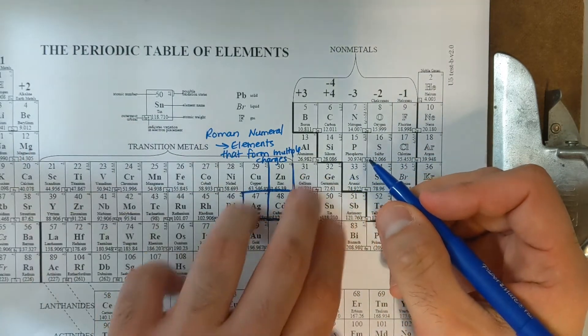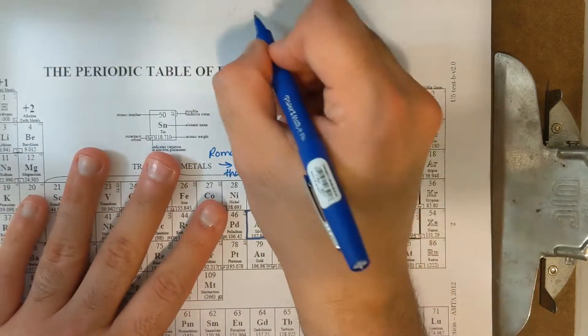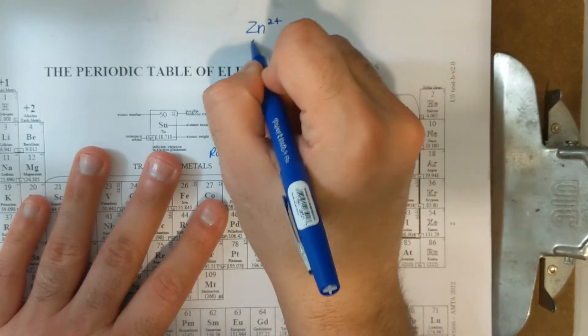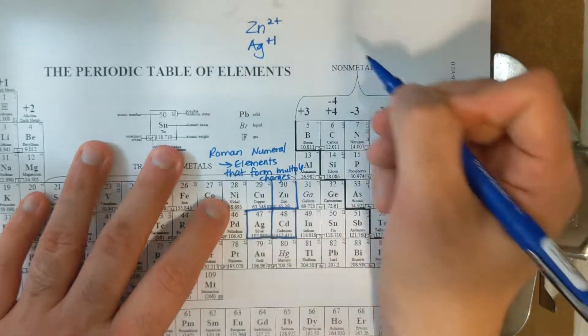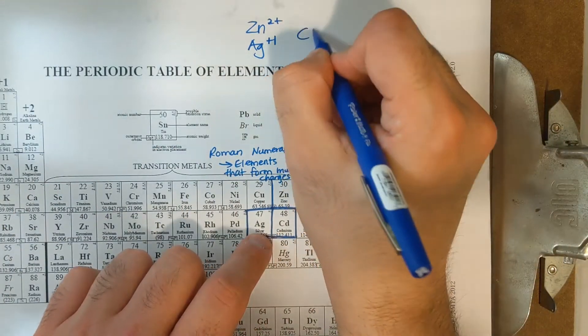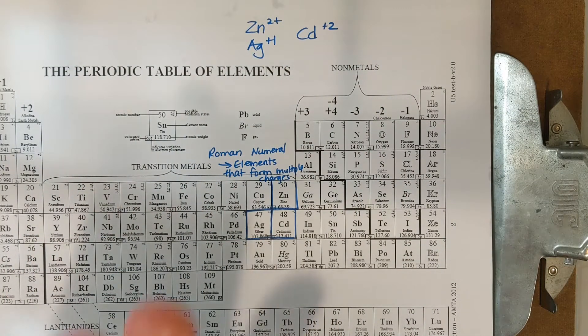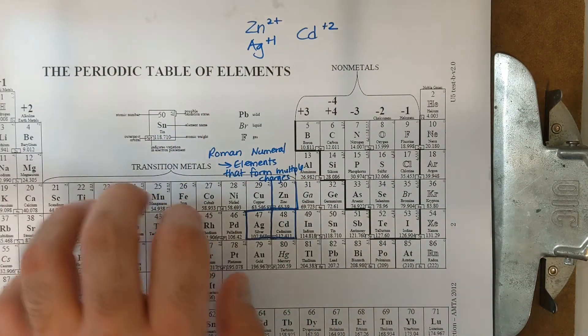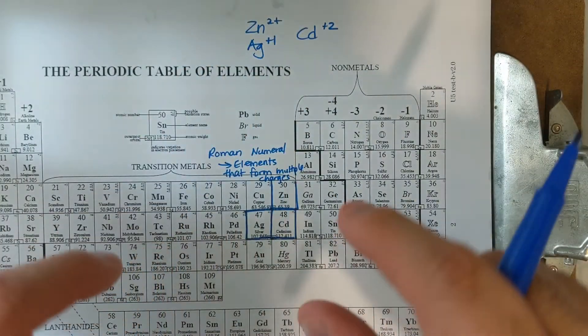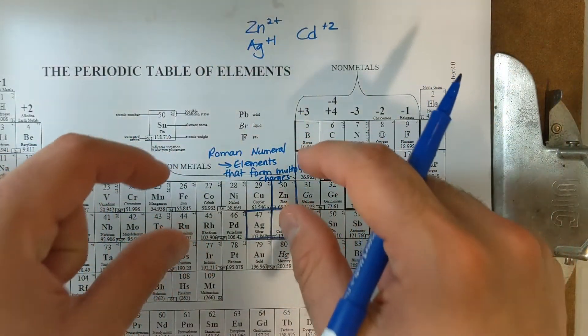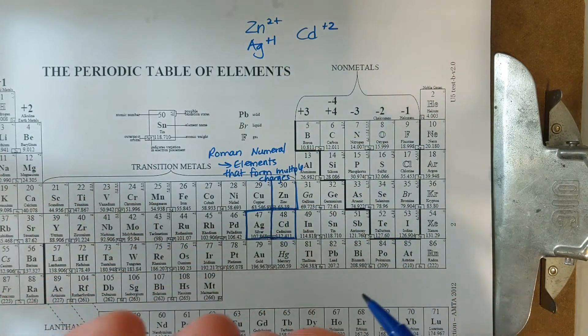All of these do not need Roman numerals because they only form one charge. So zinc is plus two, silver is plus one, cadmium is also plus two. Those are ions that show up in the transition metal block, but they only form one charge.